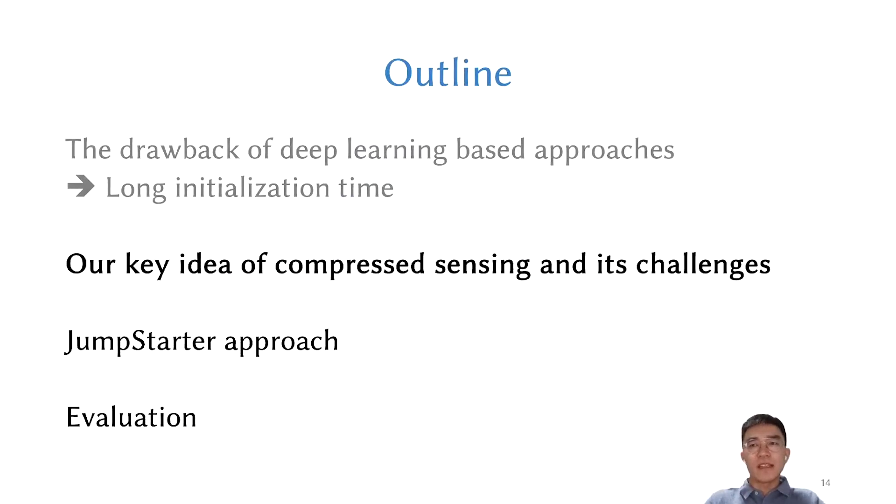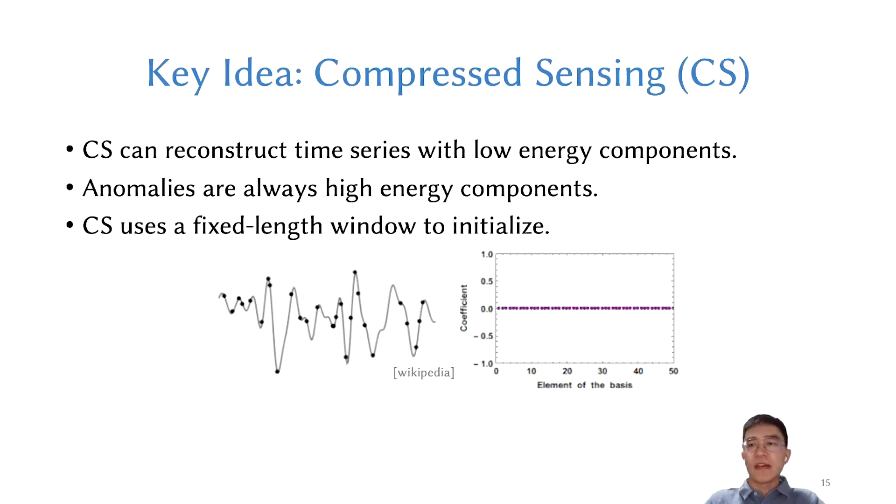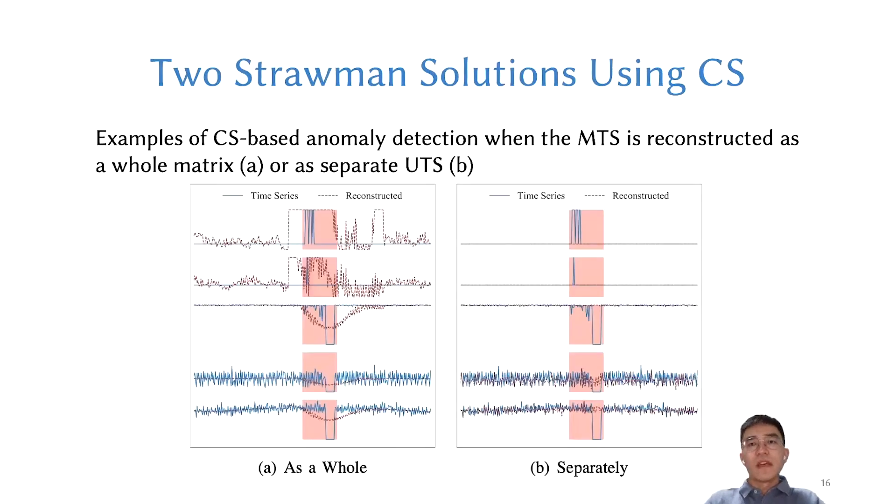Then I will talk about our key idea using compressed sensing and its challenges. Compressed sensing is a signal processing technique where high energy components in our MTS matrix are sparse. The intuition behind using CS for anomaly detection is that anomalies in MTS, such as jitters, sudden drops, or surges, usually manifest themselves as strong signals that contain high energy components. We can then detect anomalies by comparing the original and reconstructed MTS using a fixed-length sliding window. This is the first step to use CS for MTS anomaly detection to the best of our knowledge.